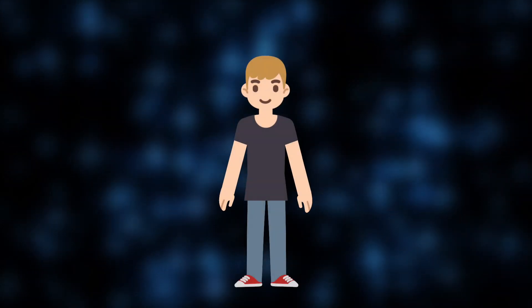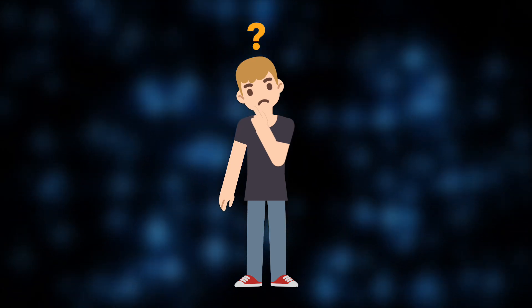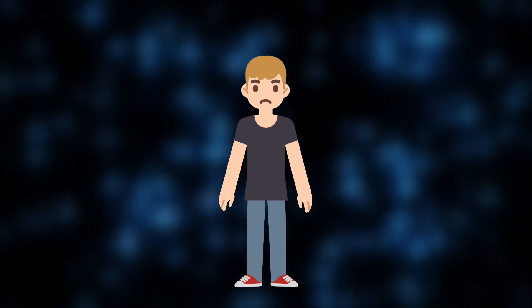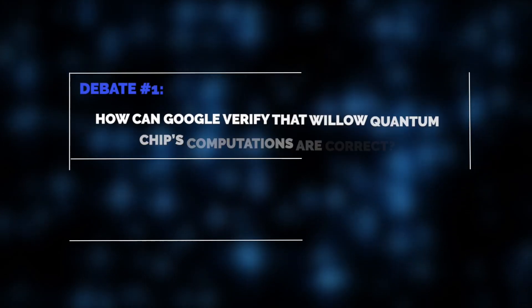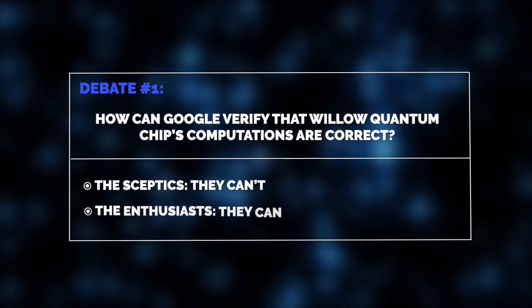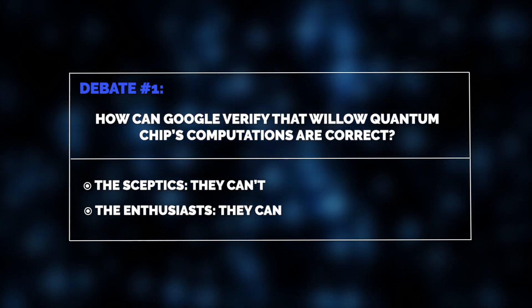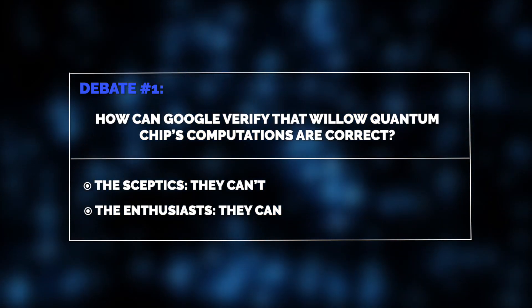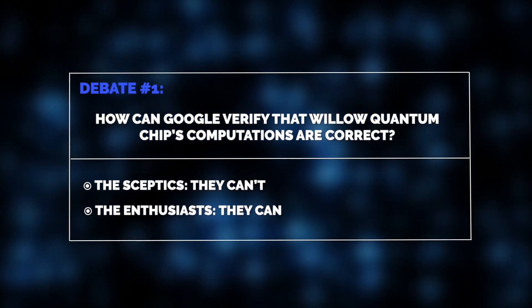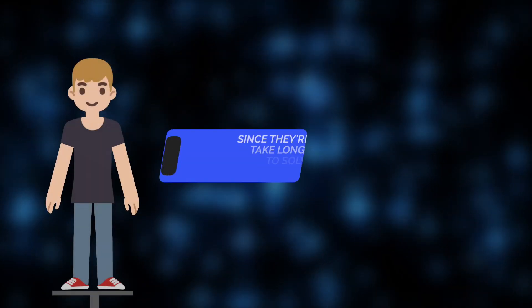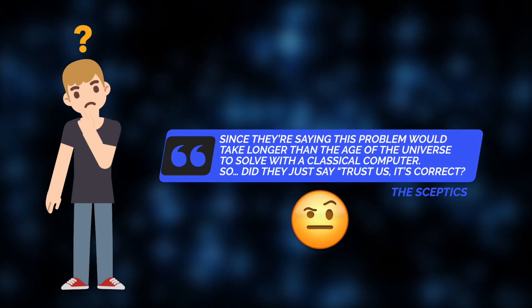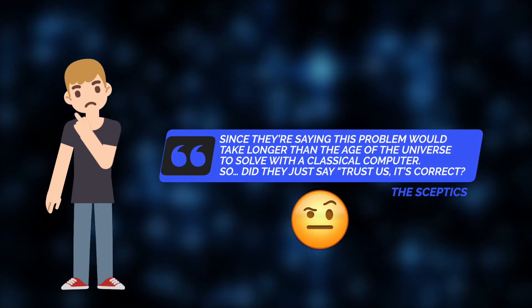Seeing undeniably impressive results, Jelvix skeptics immediately raised a fundamental concern. How can Google verify that Willow quantum chip's computations are correct? Google claims the chip can solve a problem in five minutes that would take a supercomputer 10 subtillion years, longer than the age of the universe. This raises a big question. How can we verify the solution is correct, or do we just have to trust their claims?